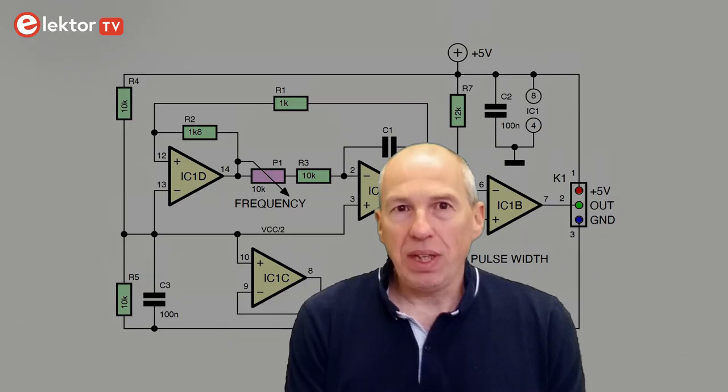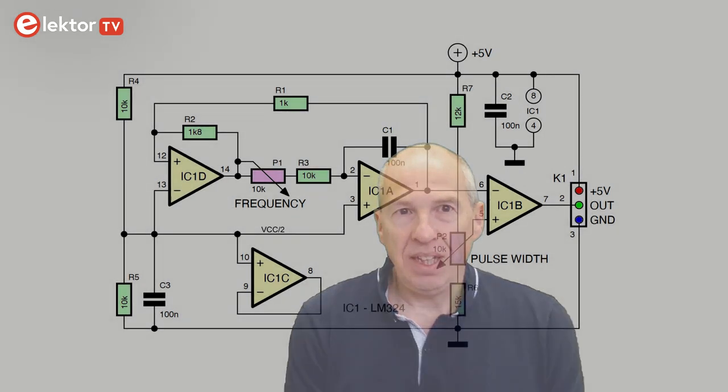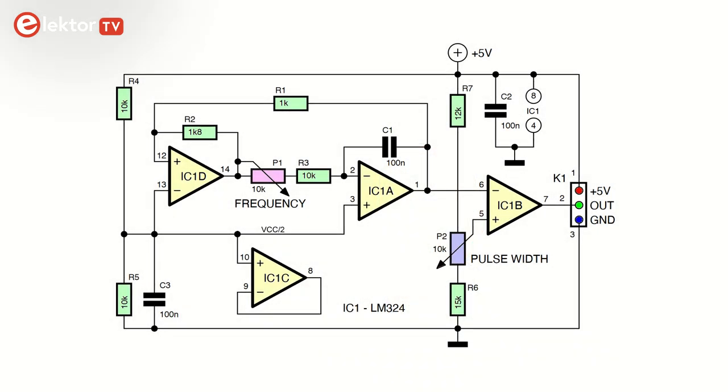To create a rectangle wave with variable frequency and variable duty cycle, I use this circuit. It is a classic op-amp-based triangle and rectangle wave oscillator. You can use any other generator capable of producing a rectangle wave with variable duty cycle.